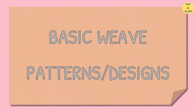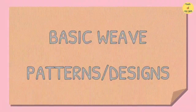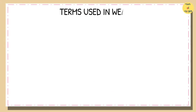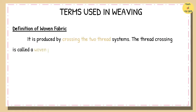Basic Weave Designs. A woven fabric is produced by crossing the two thread systems of warp and weft. The thread crossing is called a woven pattern or weave texture.